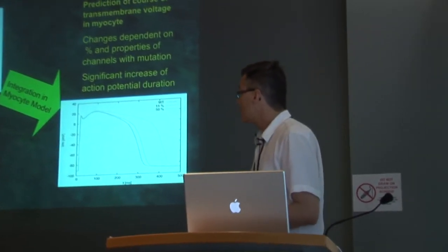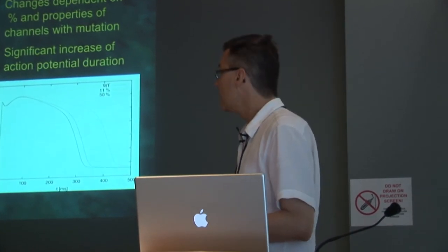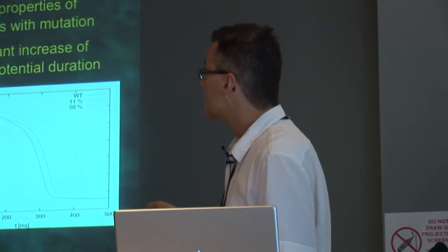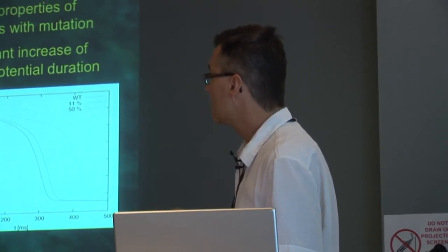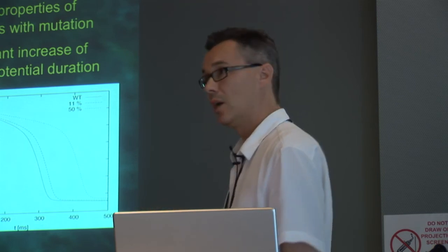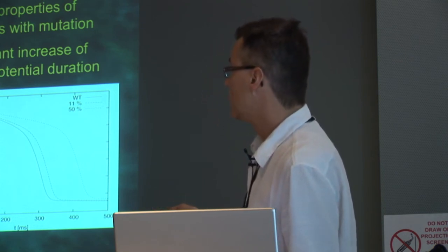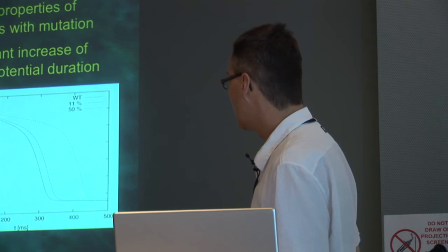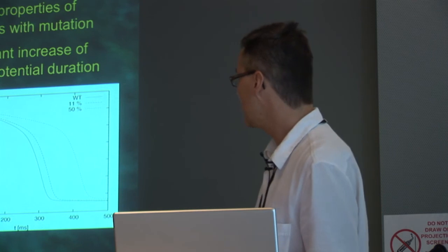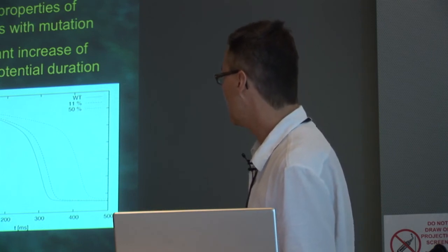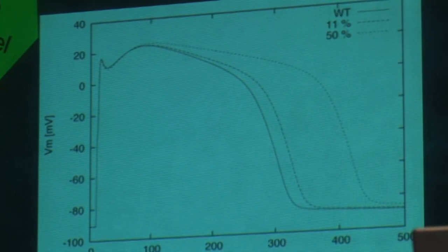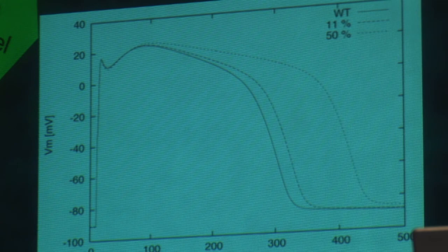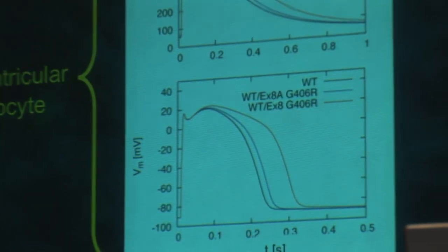Functional characterization of these channels expressed in the oocyte expression system revealed that the standard voltage-dependent inactivation is attenuated — we have only about 50% of the inactivation of those channels. Taking this information and plugging it into a complete myocyte model gives a hint on what might be going on: we see a dramatic and significant increase in action potential duration. Depending on the level of defect at 50%, the action potential duration is increased by 100 and something milliseconds — a first indication of what can explain the phenotype.